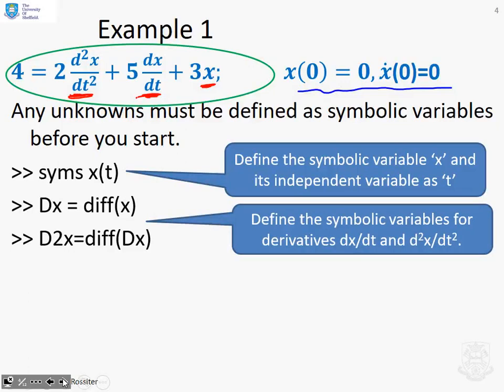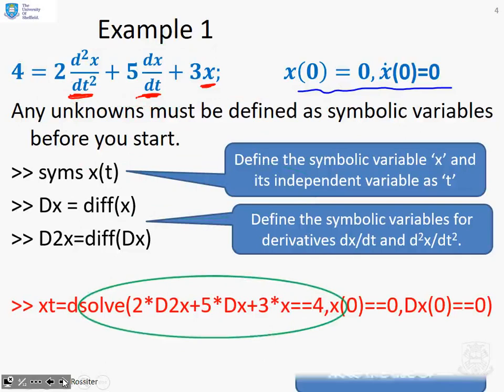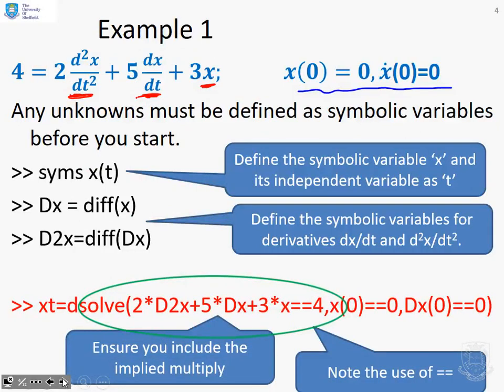We then define Dx as diff(x), which gives us dx/dt, and D2x as diff(Dx), and that gives us d²x/dt². So we've now got symbolic variables for each of the terms in our equation, and then all you do is plug all of them together as you can see here. If you look at the bit in the green circle, which we mark here, you'll see that this is identical to this equation up here. The coefficients have just been taken down direct. So 2 times D2x is equivalent to 2 d²x/dt², 5 times Dx is equivalent to 5 dx/dt, and 3x is 3x.